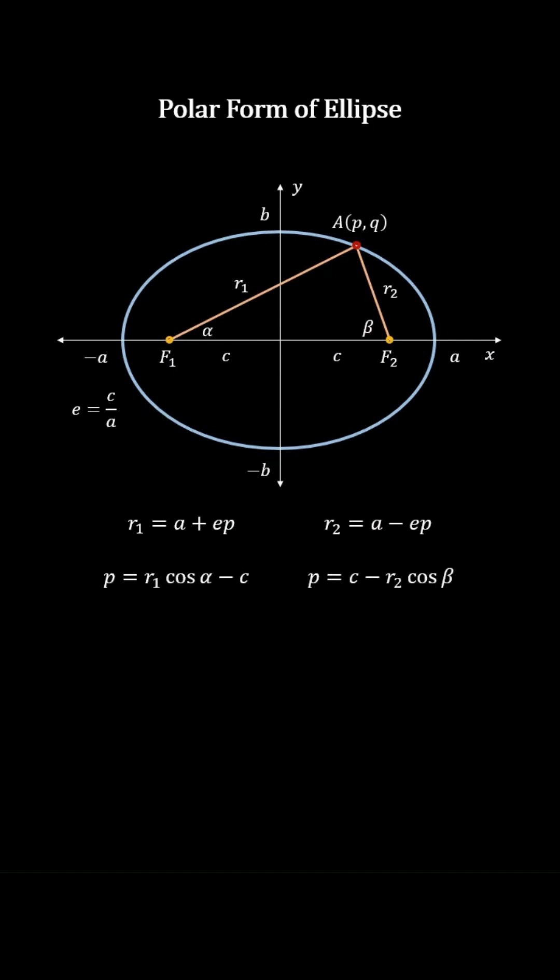And from the focus F2 is R2 equals A minus EP. Also, since P equals R1 cosine alpha minus C, or P equals C minus R2 cosine beta.